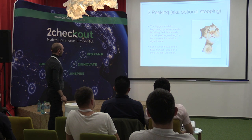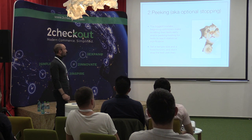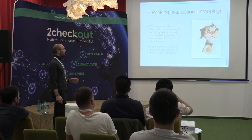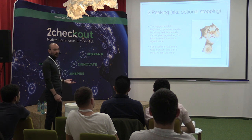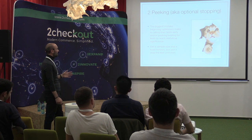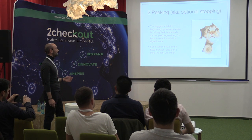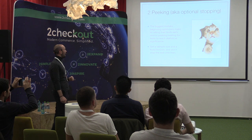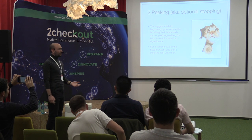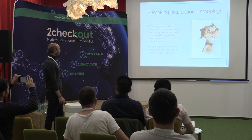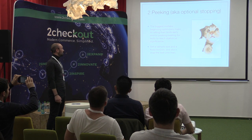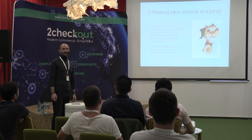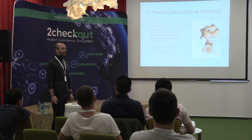The second mistake — this is more for AB testing, but sample size calculation can definitely help you avoid it — is peaking. Probably everyone that does conversion rate optimization has this problem: we launch a test and we can't wait to stop it and tell the business, oh yes, we got a winner.